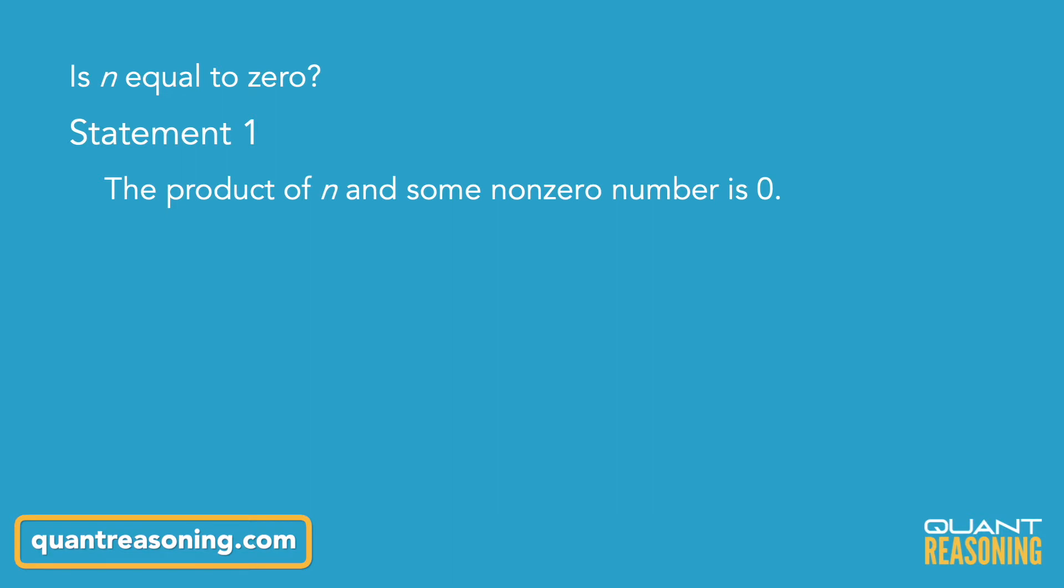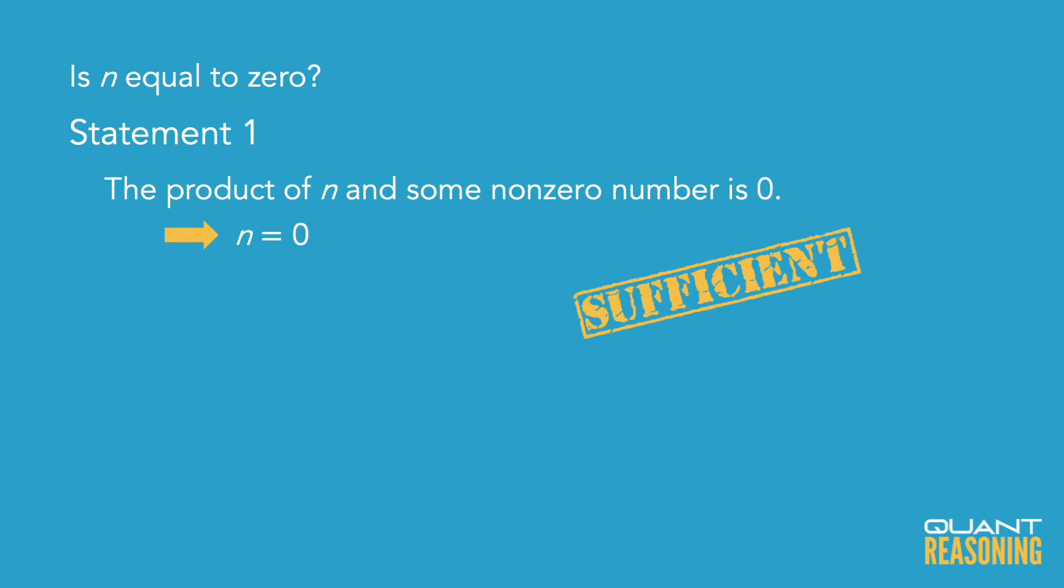So you've got n and you've got some nonzero number. Well then n must be 0, because at least one of them has to be 0 in order for their product to be 0. So Statement 1 is sufficient. It gave us a definitive yes.